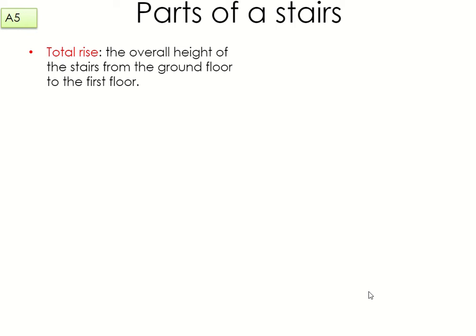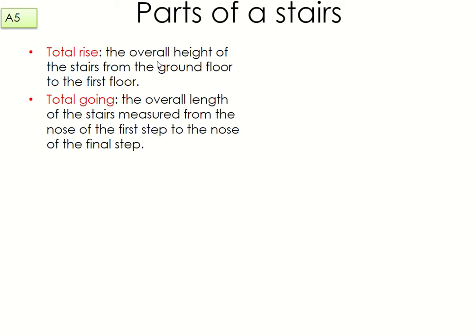Now we're going to explain some of these terms. The total rise of the stairs is the overall height from the ground floor to the first floor. The total going is the overall length of the stairs measured from the nose of the first step to the nose of the final step. The nose is basically the front part of the step.